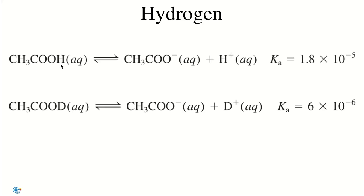For example, the ionization constant of acetic acid with hydrogen is 1.8 × 10^-5, but the same reaction with deuterated acetic acid is different: 6.6 × 10^-6, so smaller than the constant with hydrogen.